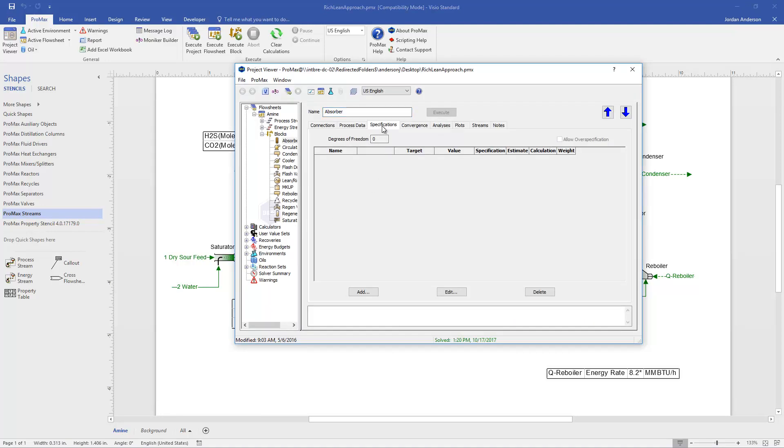If I open the absorber, I'm coming here to the specifications tab and I'm going to click Add to add these different calculations. Clicking Add and looking at our list of specifications, we'll see a lean approach and rich approach option. And let's start with the rich approach. Once I've chosen my specification, I can name this and I'm specifically going to do this for H2S. Again, you could do this for CO2 or other components. But I'll do it for H2S and click OK.